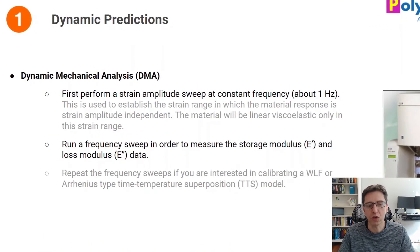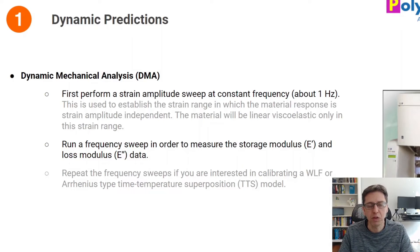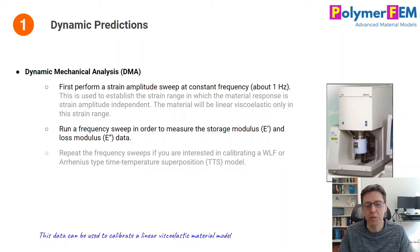For dynamic predictions, you would use a dynamic mechanical analysis (DMA) test machine. I recommend starting with an amplitude sweep at constant frequency to determine the range in which your thermoset is linear viscoelastic, since that's the regime we want to stay in. Once you've determined that, switch to a frequency sweep to measure the storage modulus and loss modulus. If needed, repeat this at different temperatures to build a time-temperature superposition model using WLF or Arrhenius type scaling.